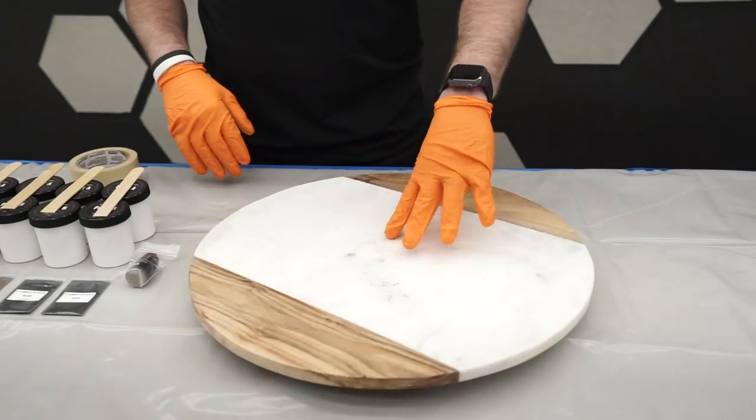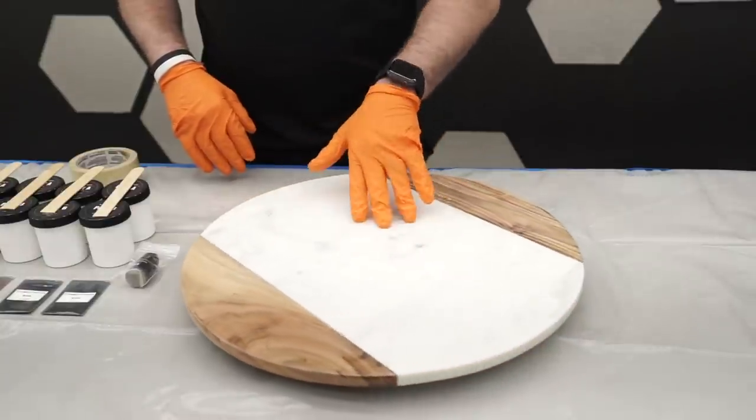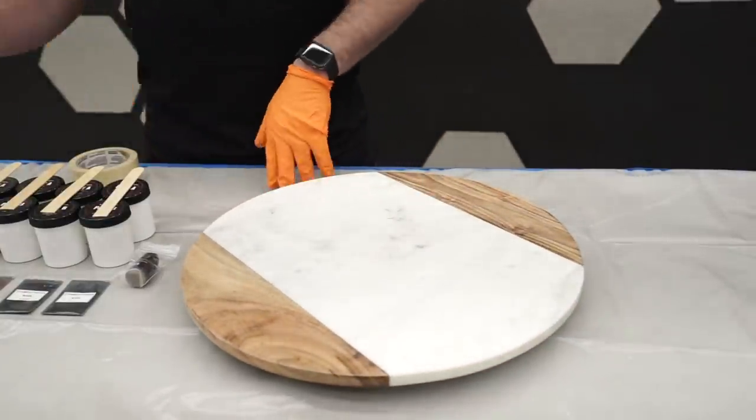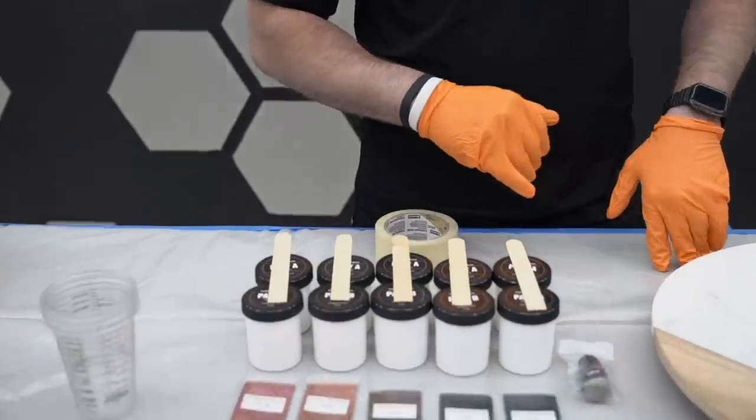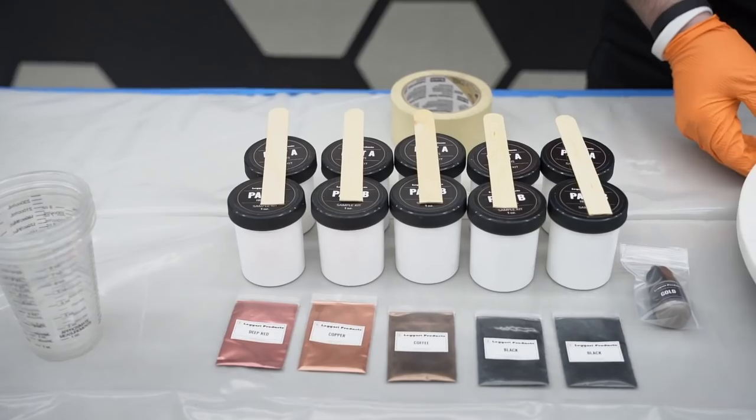We're going to be using a stone sample kit, doing our dirty pour technique on this Lazy Susan here. They loved it but they didn't like the color so we're going to use our colors that we have here and then we're going to do our stone kit process which is the dirty pour technique.